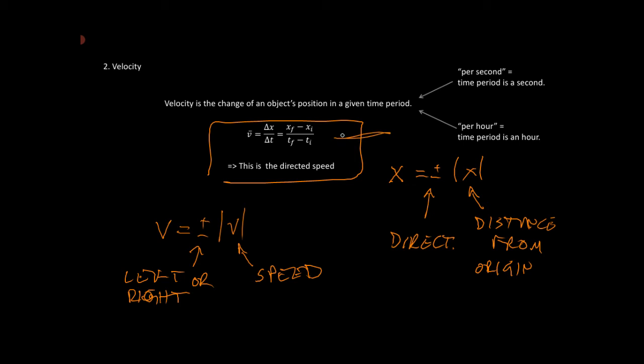You might look up here. This is talking about the change in position. Delta means change. This triangle thing is called a delta in Greek. It's the Greek D. And so, delta x is the change in position and delta t is the change in time.